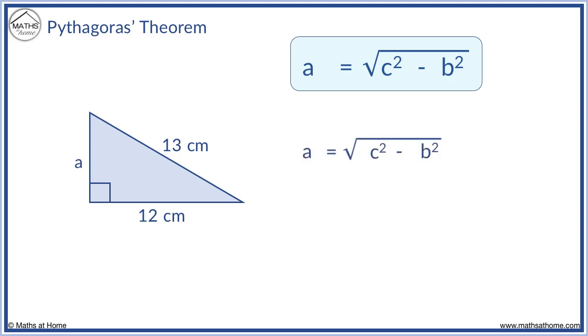We will use the formula and substitute in the values that we know. c is always the hypotenuse, which is 13. b is the other shorter side, which is 12. 13 squared is 169. And 12 squared is 144. 169 minus 144 is 25. The square root of 25 is 5. So the missing side is 5 centimetres.